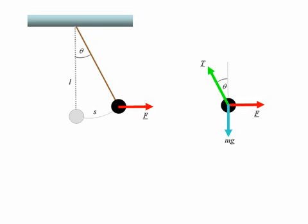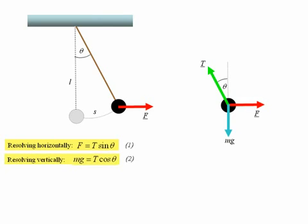Now since the bob is in equilibrium at every stage along its path, we can resolve the forces horizontally so that F must be equal to T sin theta, and if we resolve vertically, MG must be equal to T cos theta. If we divide equation 1 by equation 2, then F divided by MG equals tan theta, or in other words, F equals MG tan theta.